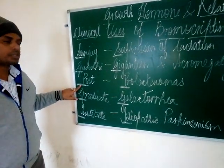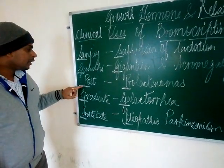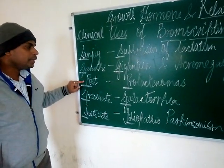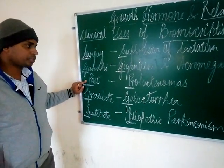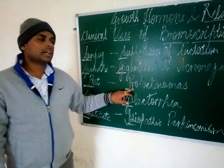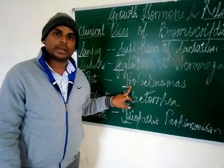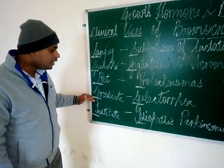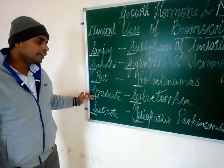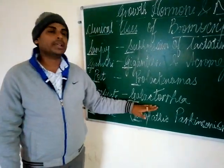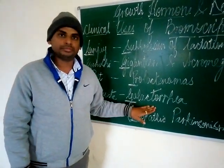Moving on to postgraduate: the P of postgraduate corresponds to prolactinomas. The G of graduate refers to galactorrhea.